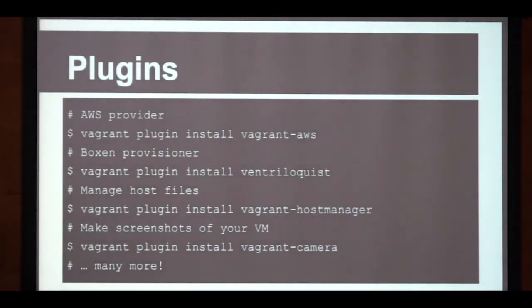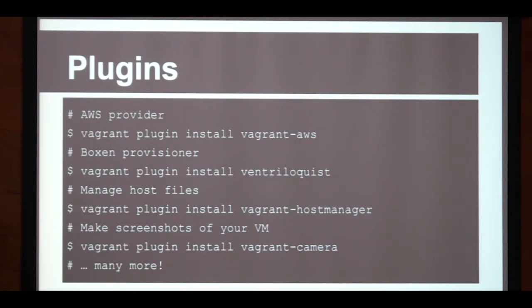You have plugins, installed with a vagrant plugin command. For example, there's a plugin to use Boxen as a provisioner, a plugin which manages your hosts files, special provider plugins, and many others. One plugin is a command that lets you take screenshots from inside your virtual machine — for example, if you use Vagrant in an automatic setup where Jenkins boots up the VM, executes your code, does some tests, and then shuts down, you can take screenshots to see what's going on.